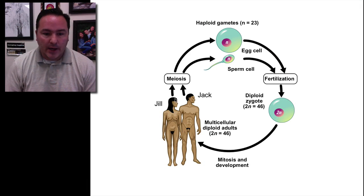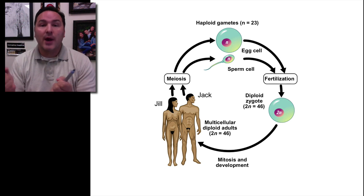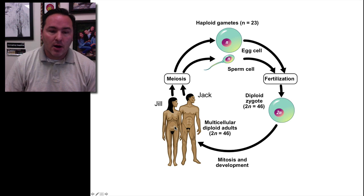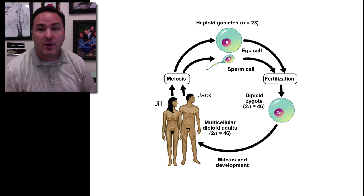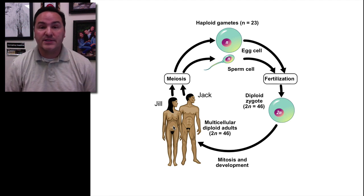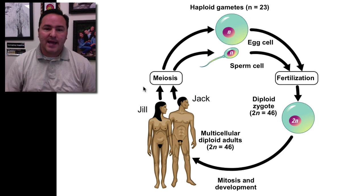We're going to follow the example of Jack and Jill and talk about how Jack and Jill can produce eggs and sperm, and how these cells are very different from the rest of the cells produced during mitosis. Every single cell in their bodies can reproduce through mitosis, with the goal of producing two identical daughter cells. The only exception are the cells in the ovaries and testes, which produce gametes — sperm and egg — through the process of meiosis.